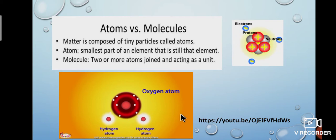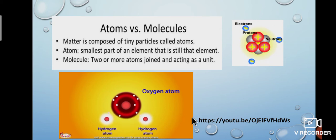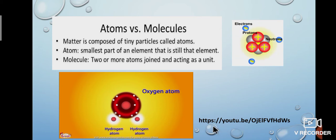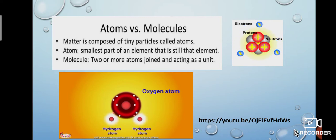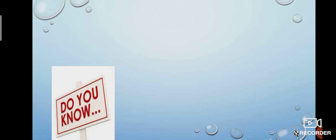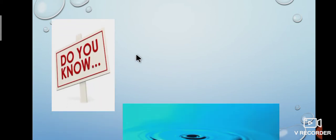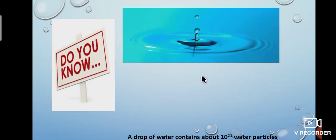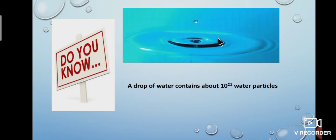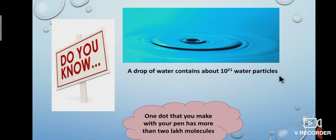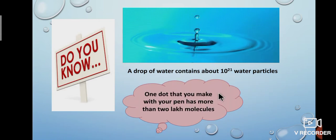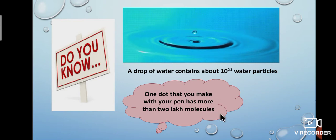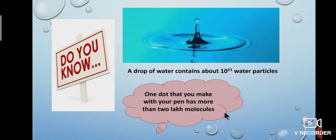Molecules join together to give matter. To know more details about states of matter and physical nature of matter, see the link below. Do you know? A drop of water contains about 10 to the power of 21 particles — that is above one billion. Like that, one dot that you make with your pen has more than 2 lakh molecules.